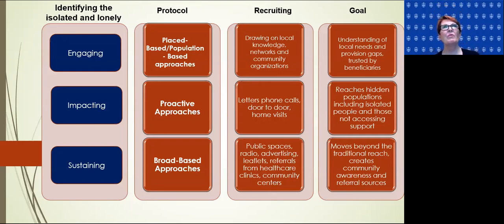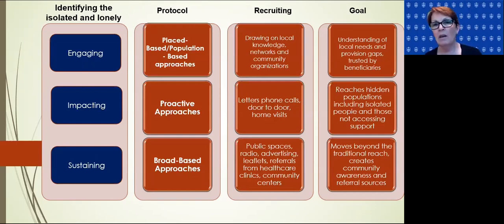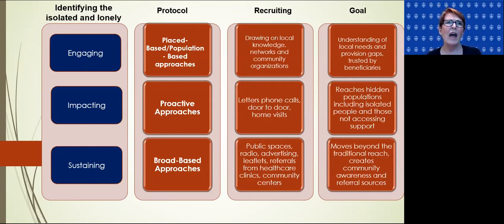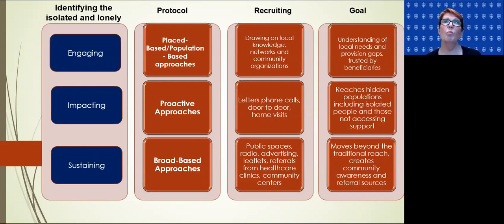We have begun to segregate older adults — retirement communities, residential facilities, and even activities are segregated by age. And more informally, families have moved away. My children, for instance, did not grow up within 500 miles of grandparents and had very little opportunity as they were growing up to interact with them. With the mobility we're experiencing in society, that's becoming more and more the case.